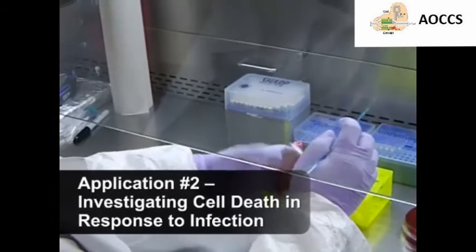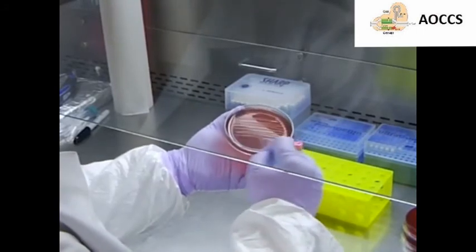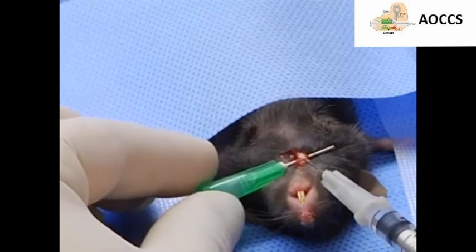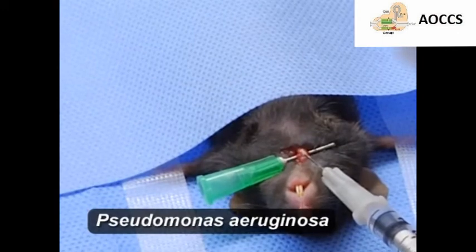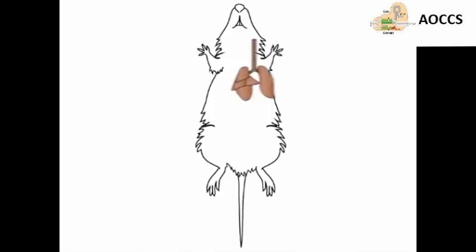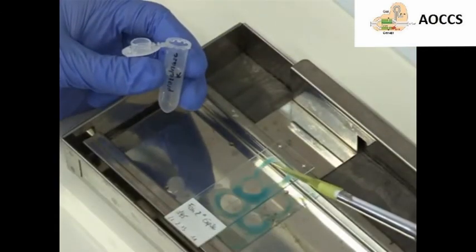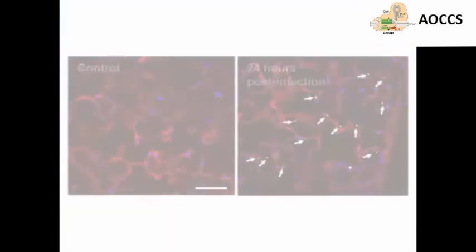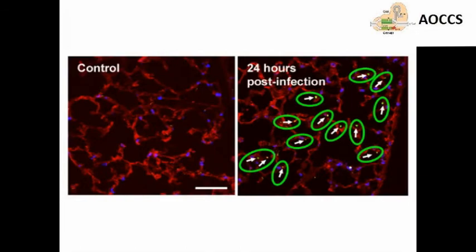Scientists also use the TUNEL assay to investigate apoptosis in response to bacterial infection. In this experiment, scientists developed a model of pneumonia by injecting mice with Pseudomonas aeruginosa, which induces lung inflammation. Then lung tissue was removed and TUNEL staining was performed to examine apoptosis in response to the bacterial infection. Results show that apoptotic cell death increased in mice exposed to the bacteria as compared to control animals.